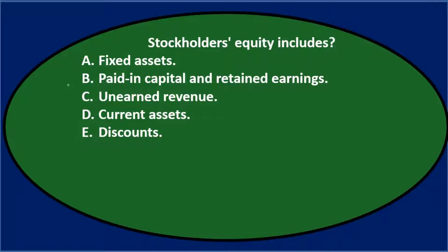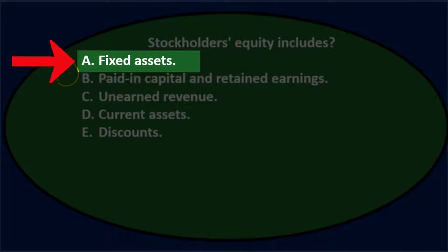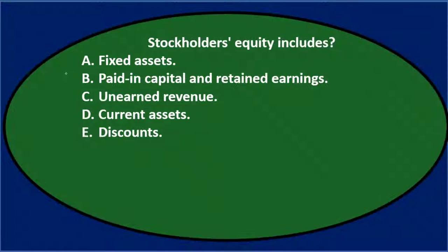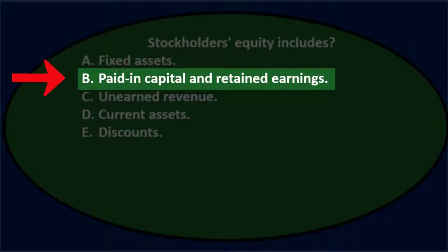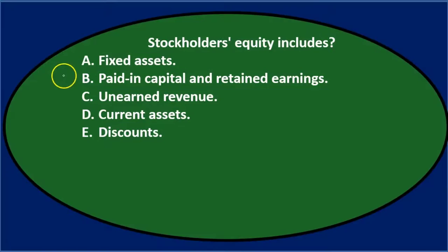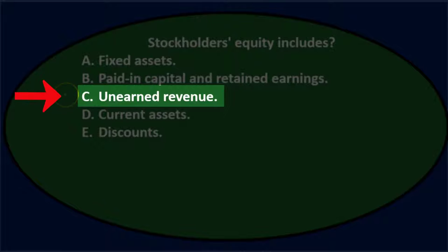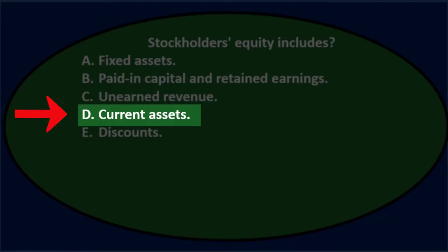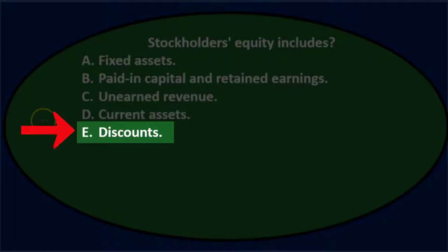Next question. Stockholders equity includes: A. Fixed assets. B. Paid-in capital and retained earnings. C. Unearned revenue. D. Current assets. E. Discounts.